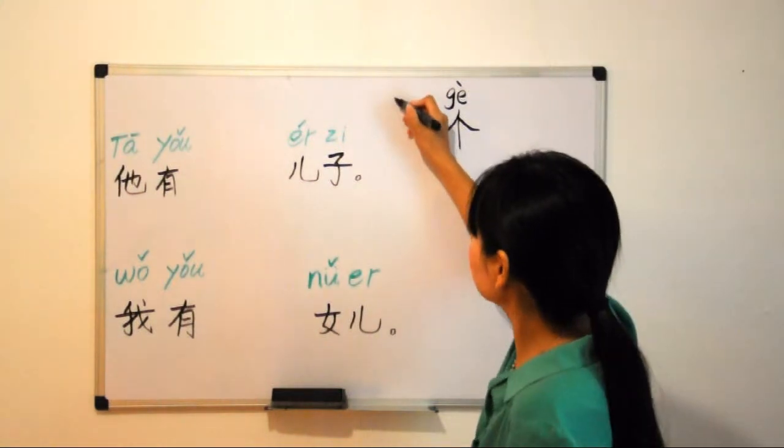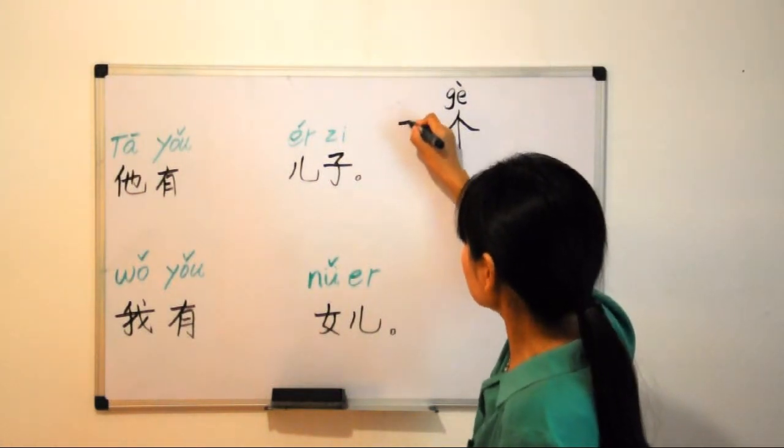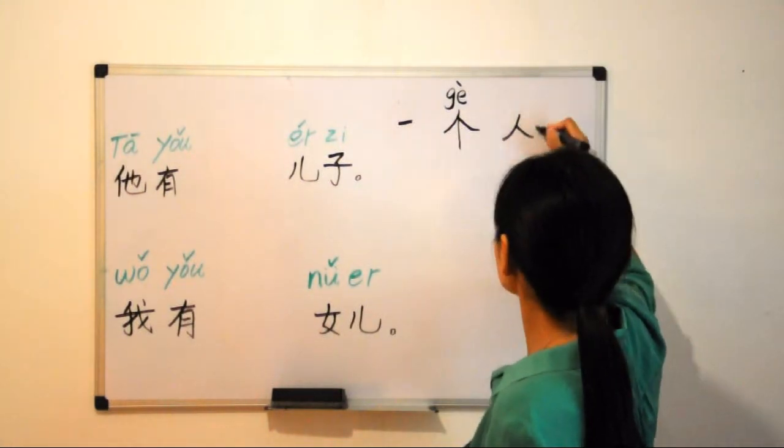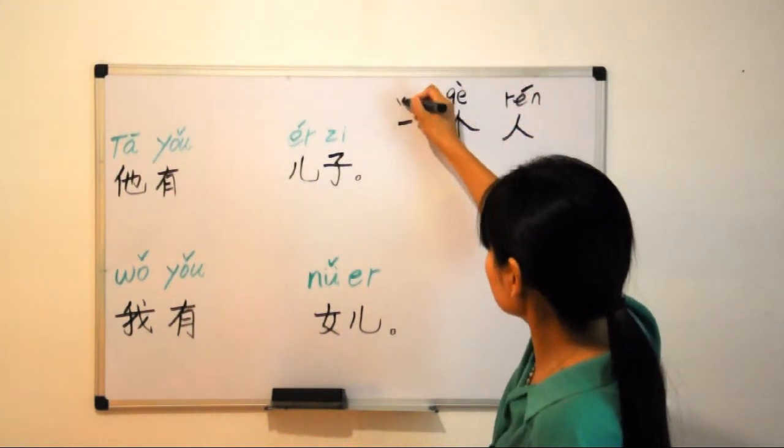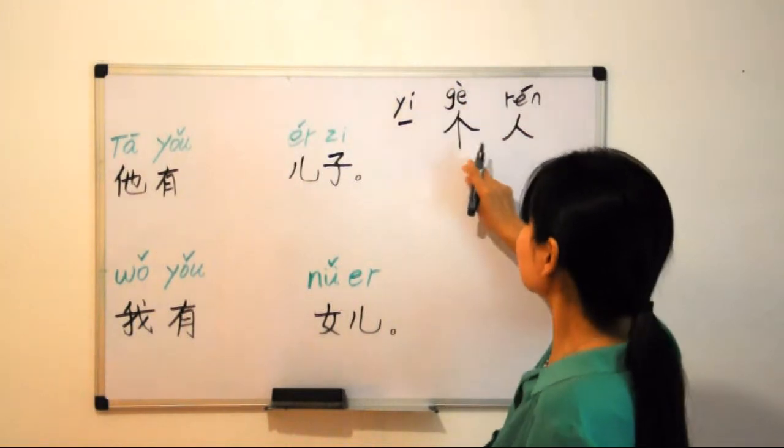一个人 (yí gè rén). 人 (rén). Remember how to write the spelling? 一个人 - one person.